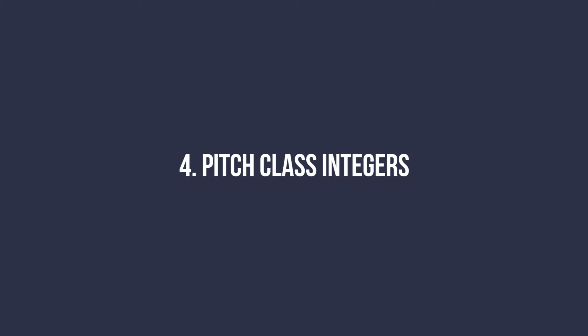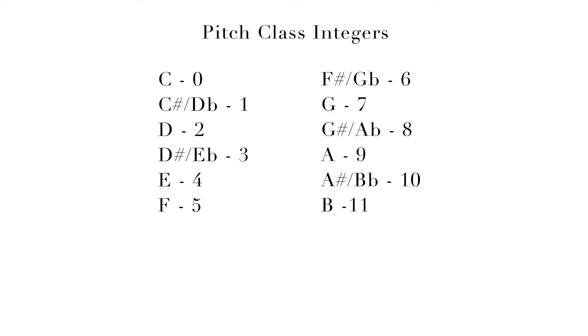We have exactly 12 pitch classes because of enharmonic equivalency. Traditionally in post-tonal music, we use a fixed-do system in which pitch class C is assigned to the number zero, and every half step above that gets the next number, going all the way to pitch class B, which is assigned 11. Why we use zero through 11 and not 1 through 12 has more to do with mathematics than music, so just go with me on this one.